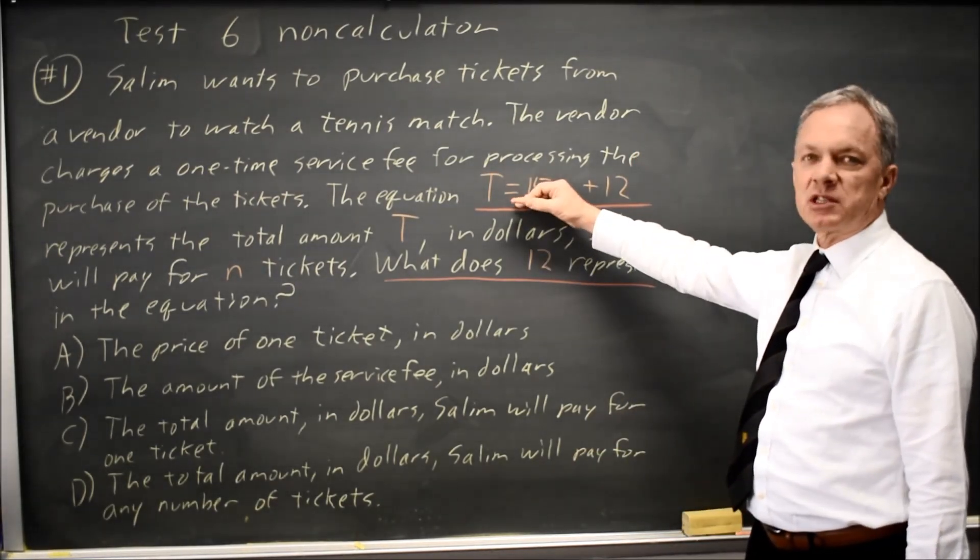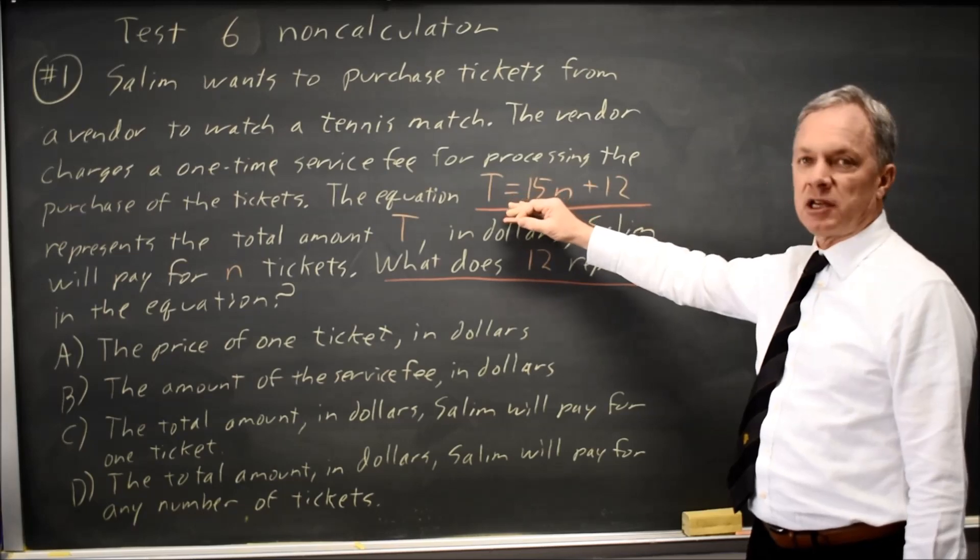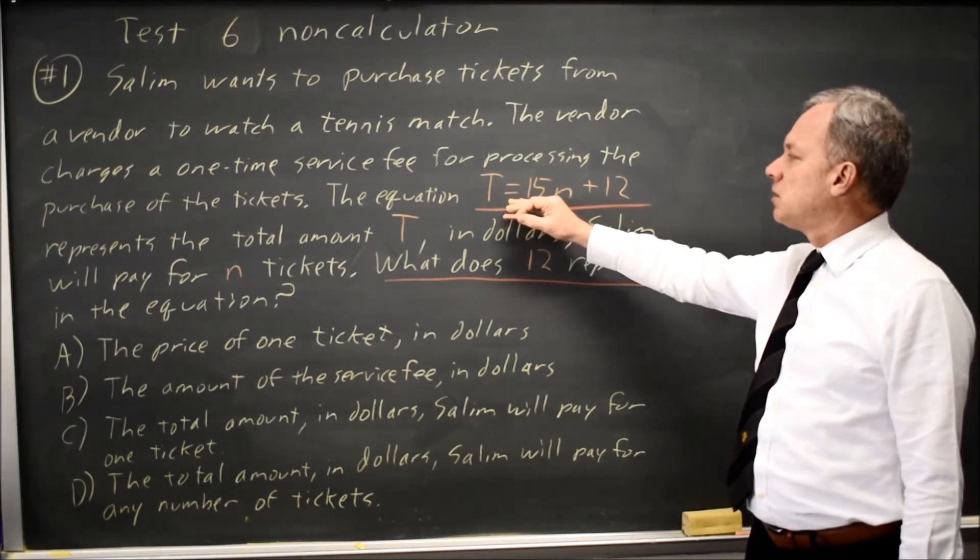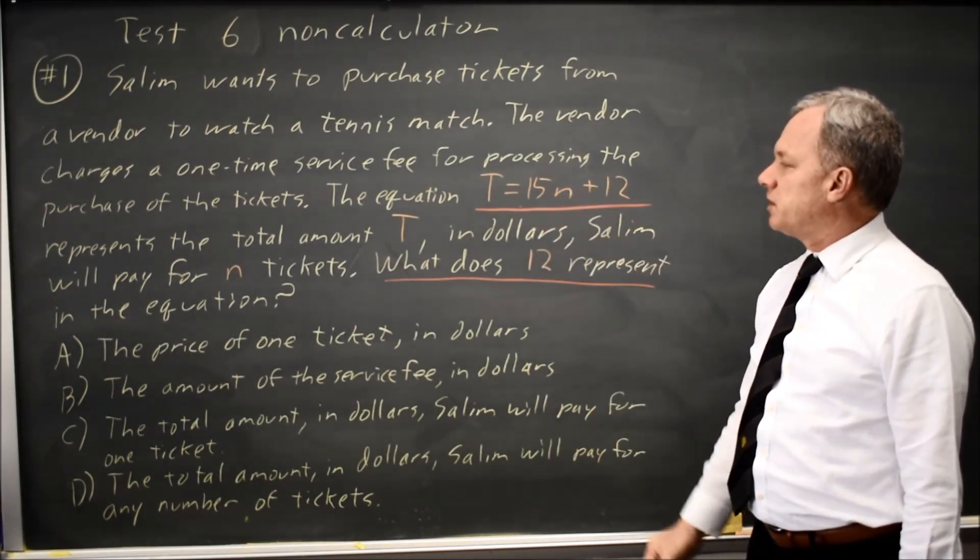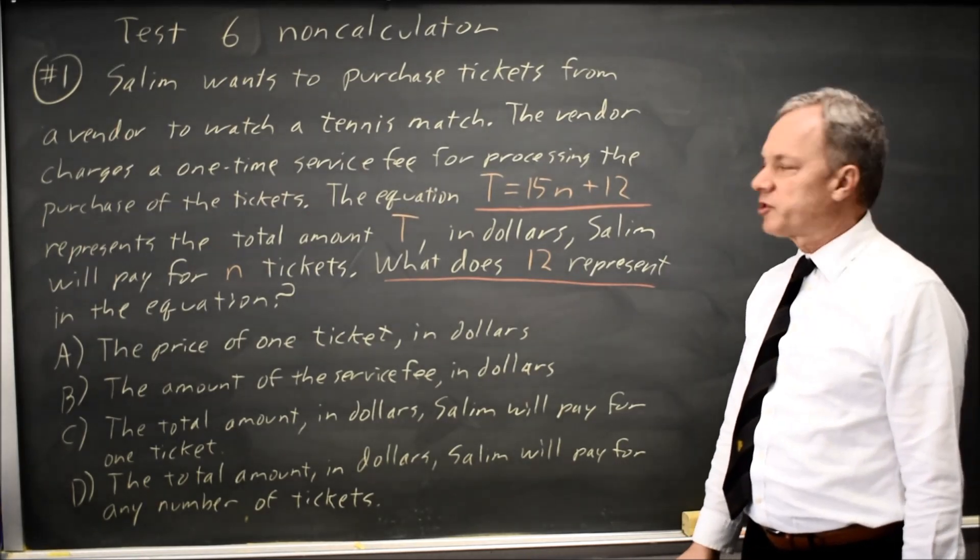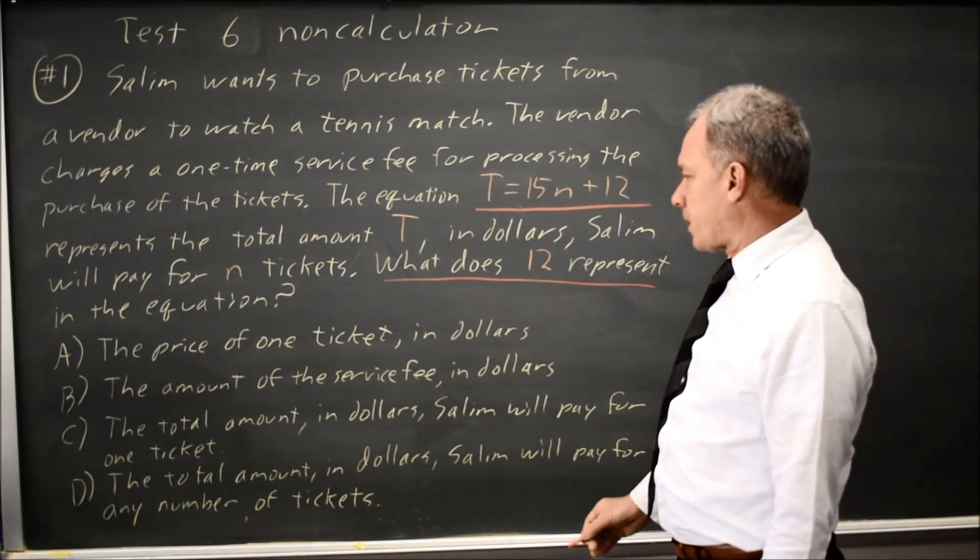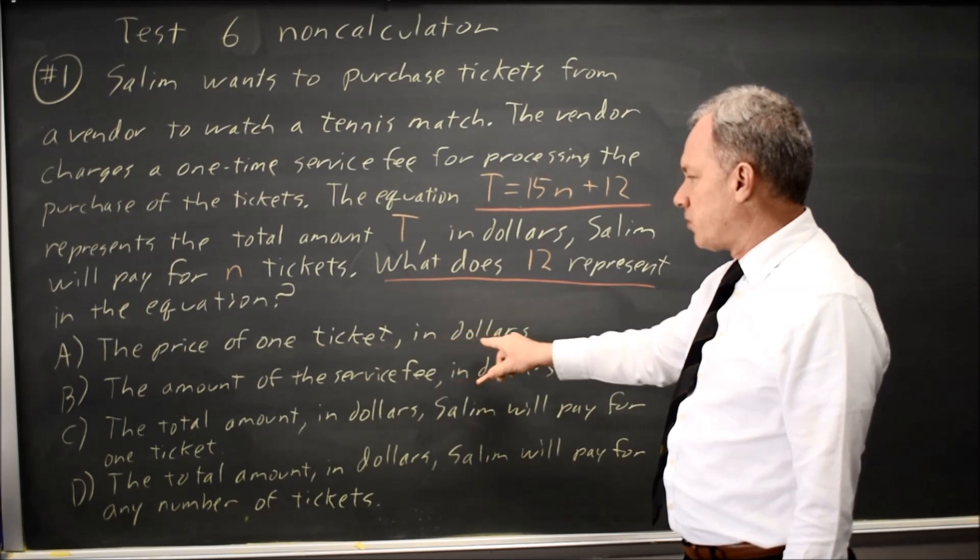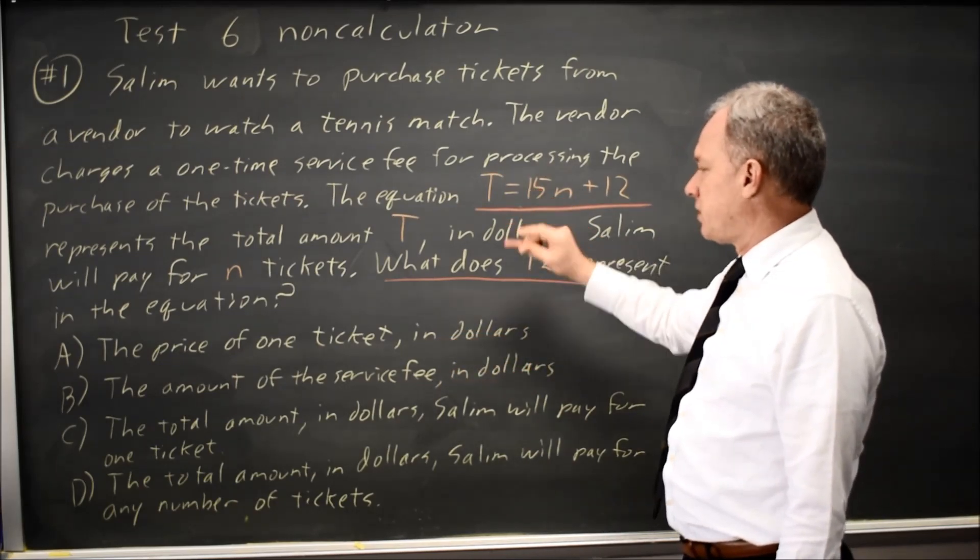The 15 represents the amount the price goes up for each increase by 1 in the number of tickets. So the price of one ticket in dollars, that would be 15, that's the slope.